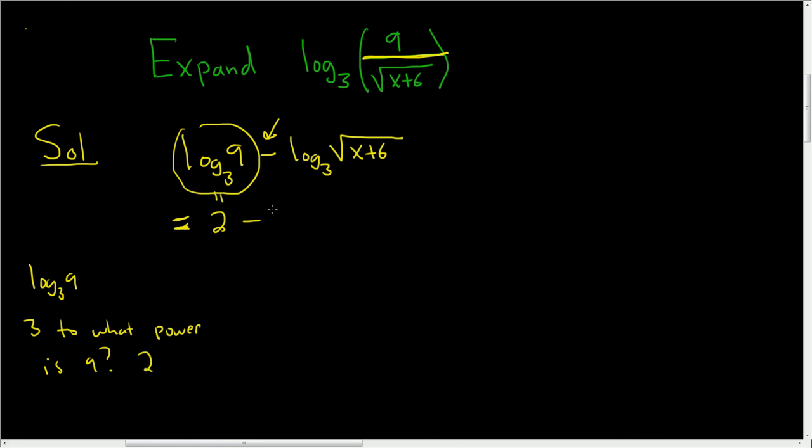Here we have minus log base 3. And we have to expand this. So let's write it this way first so that in the next step we can use the power rule and put the 1 half in the front. And let's go ahead and do that. This is 2 minus 1 half log base 3 of x plus 6. And that's the final answer.